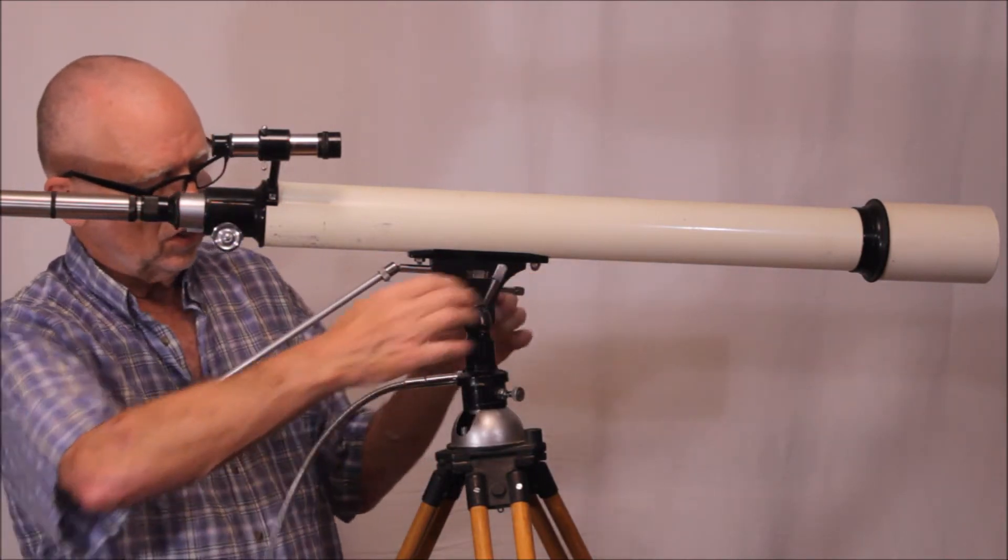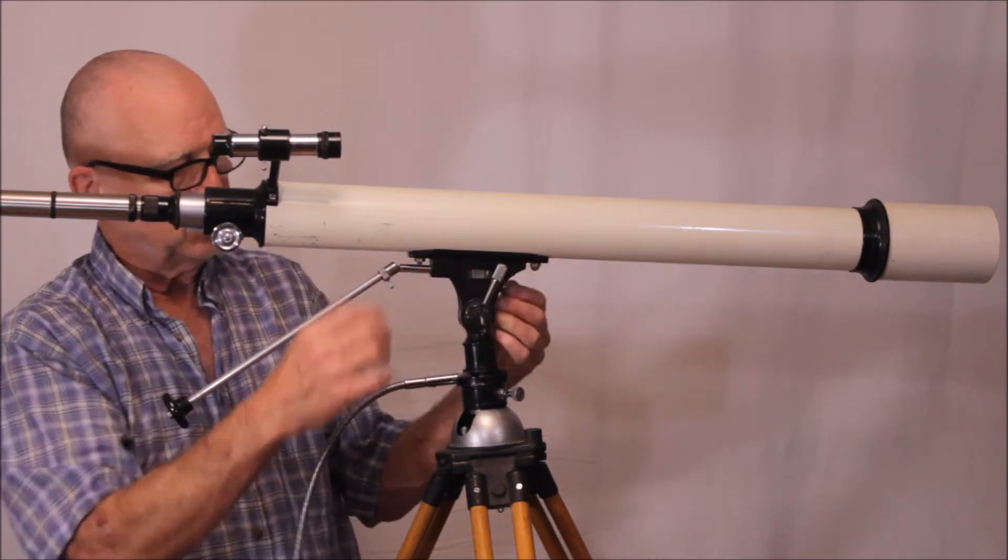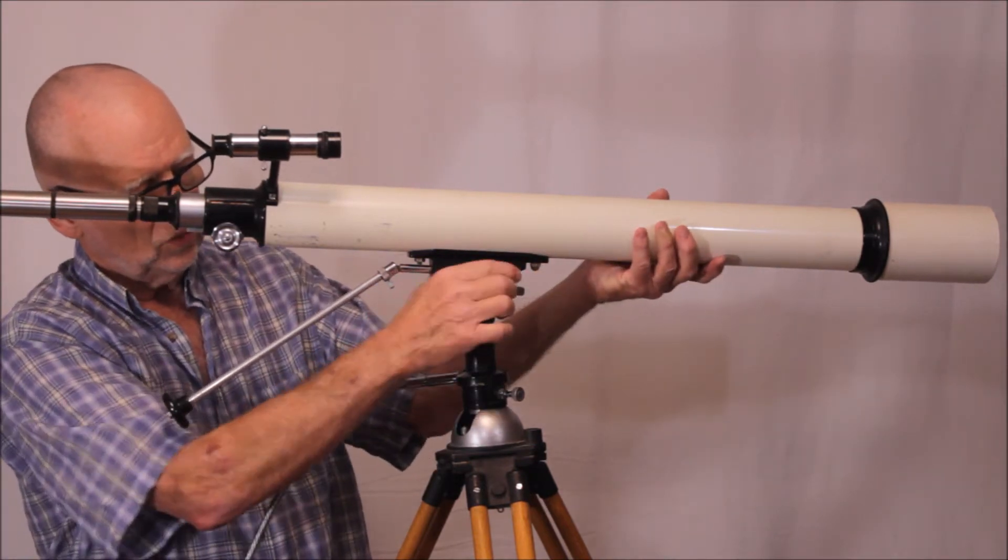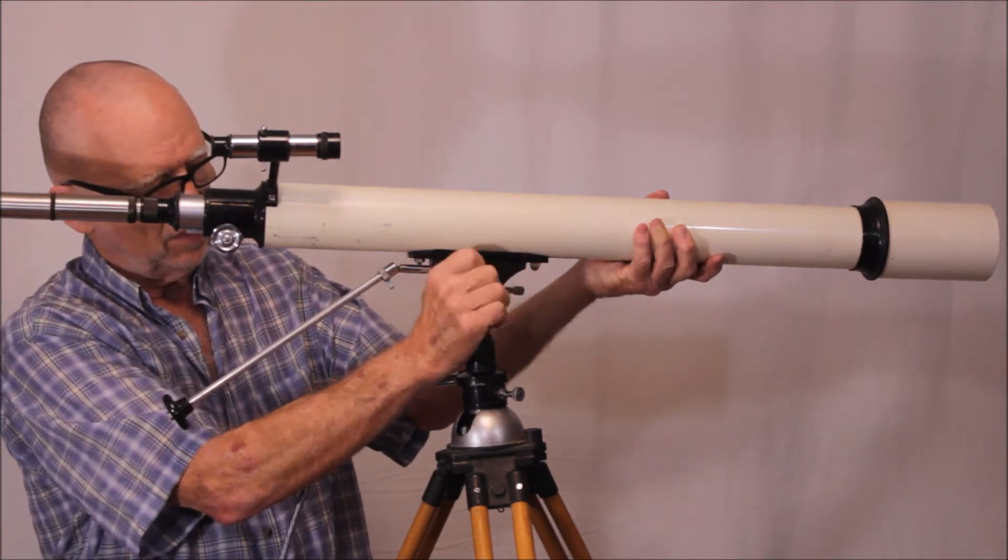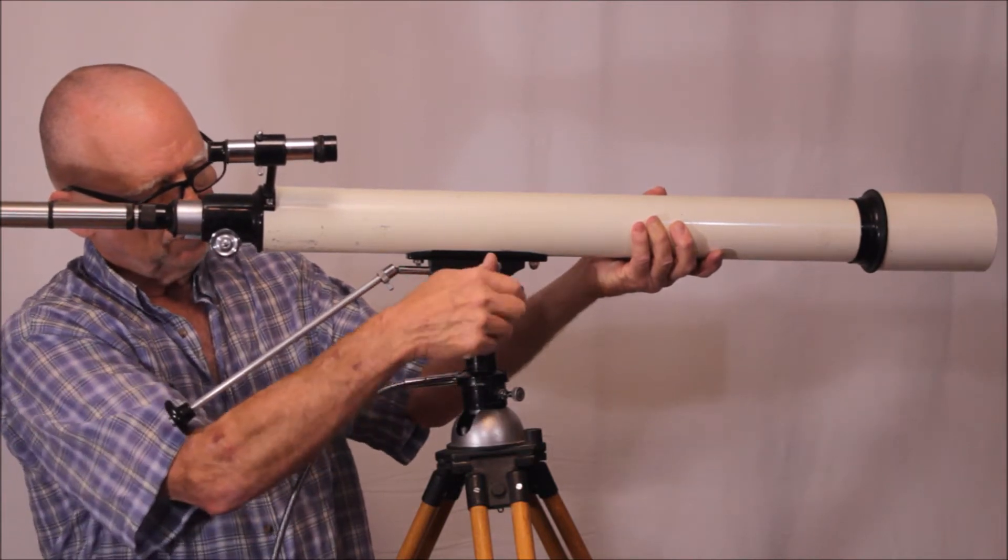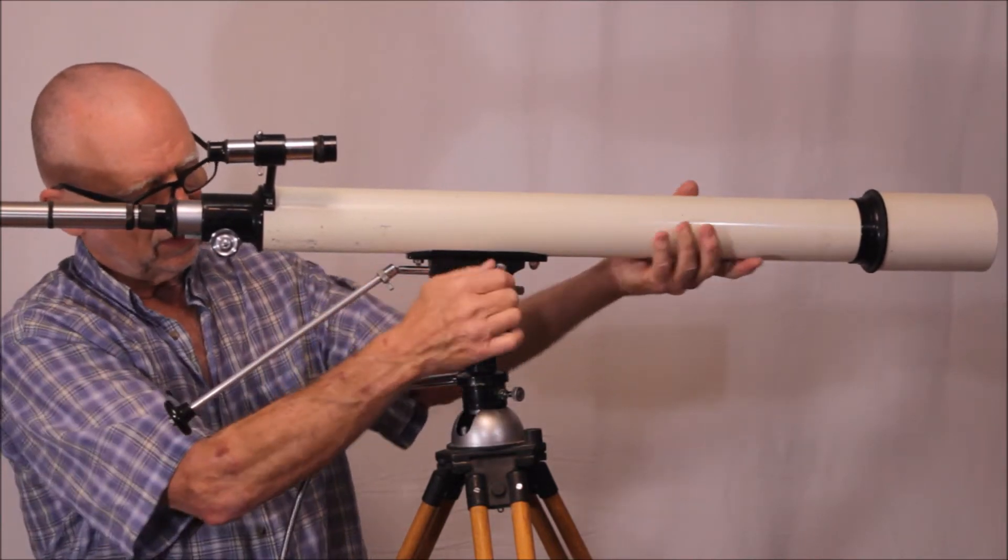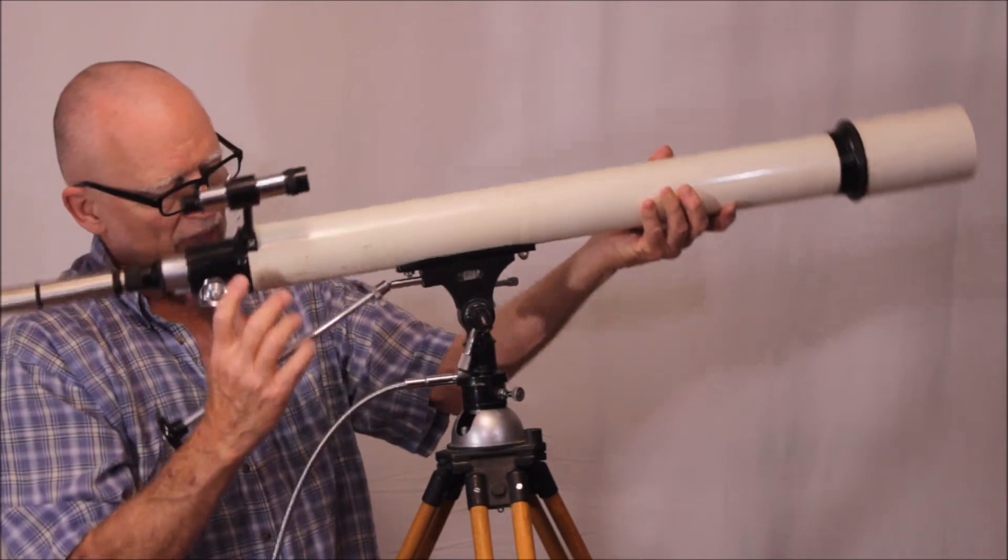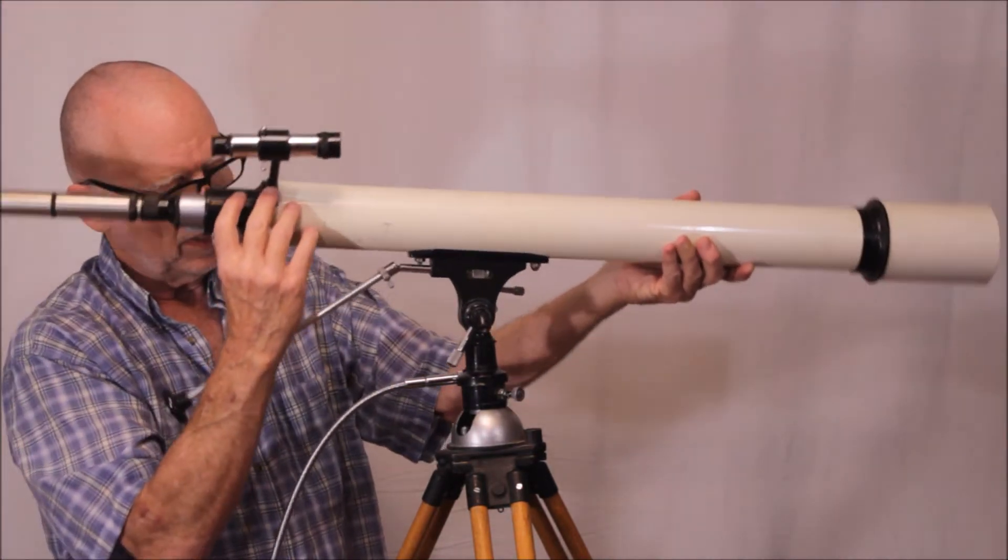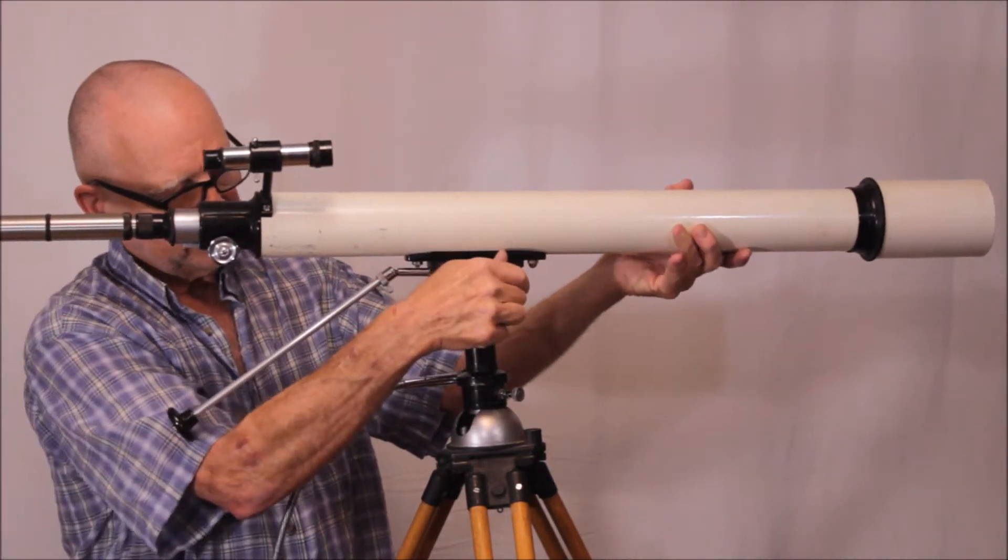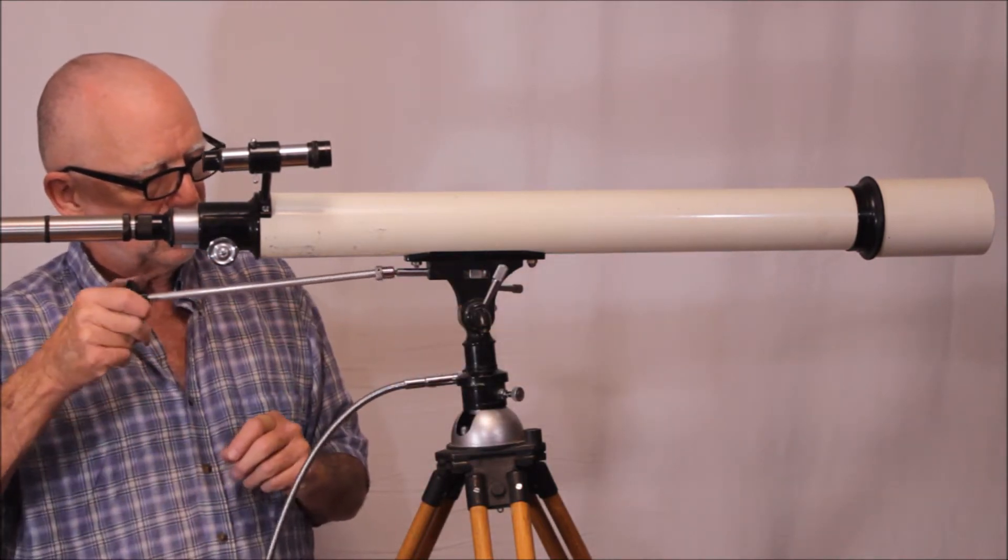Now let me show you this is interesting. It's got two separate knobs here that you could easily get confused. Two locks that could easily get messed up. This is your altitude lock here. So you lock it down in altitude. Okay up and down. Lock it down. Now you have slow motion in altitude.